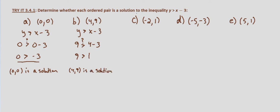Continue with the process for our other given points. With c, we have (-2,1). Is 1 greater than negative 2 minus 3? 1 is greater than negative 5. That's a true statement. So (-2,1) is a solution.